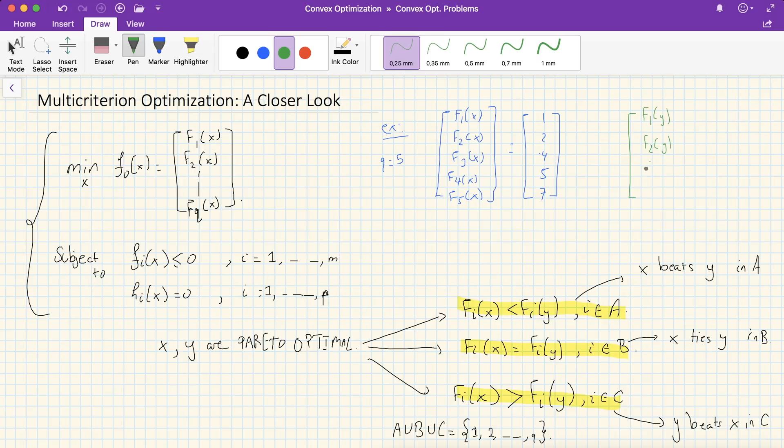Whereas F1y, F2y, F3y, 4, and 5 evaluate at 7, 6, 3, 5, and 2. So it's also given that x and y are Pareto optimal. What are the sets A, B, and C? Well, we can see that A, since 1 is less than 7,